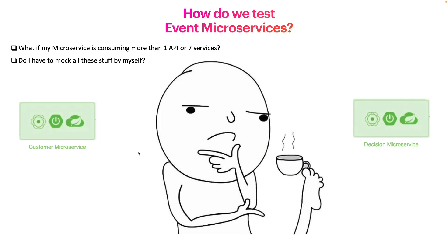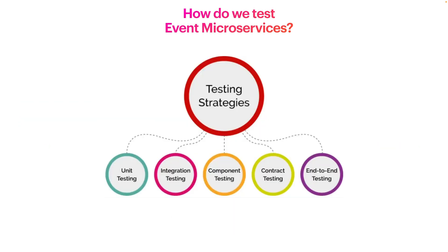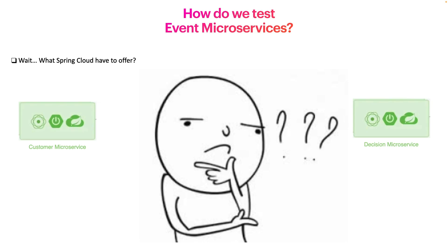Let's take a look at some testing strategies. We can see we have unit testing, which is not the case — we cannot use unit testing to test components that are communicating with events. Integration testing is interesting, but how can we do integration testing when we are talking about event-driven microservices that communicate through a pipe or messaging system? We also have component testing, which is also not the case. And next we have contract testing — something different. Let's take a look at what Spring Boot or Spring Cloud has to offer about contract testing.